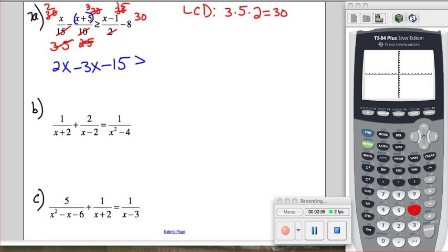It's greater than or equal to. By the way, we don't have to worry about flipping this inequality symbol because we are multiplying by a positive number. Now distribute the 15 to x minus 1. You get 15x minus 15, and then minus 8 times 30. 8 times 3 is 24, so that's 240.